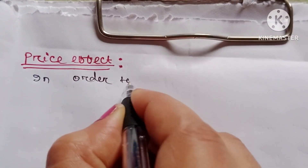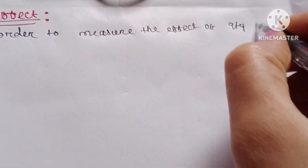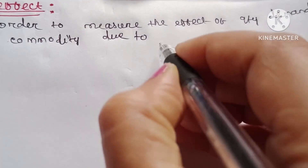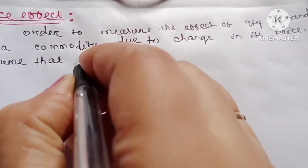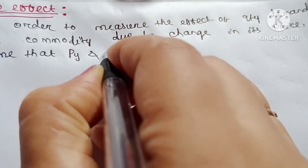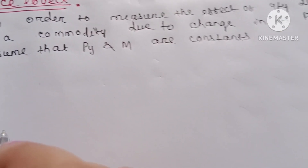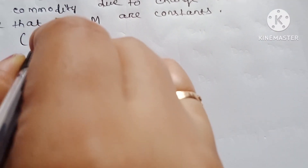We want to measure the effect on quantity demanded of a commodity due to change in its price. Let's assume that py, the relative price, and m, the money income, are constants. So here we want to study only the rate of change of x with respect to px, keeping py and m constant. Therefore, dpy and dm equal to zero.